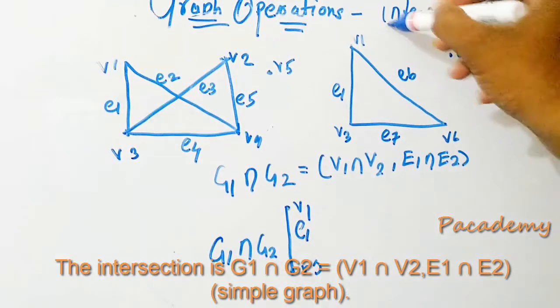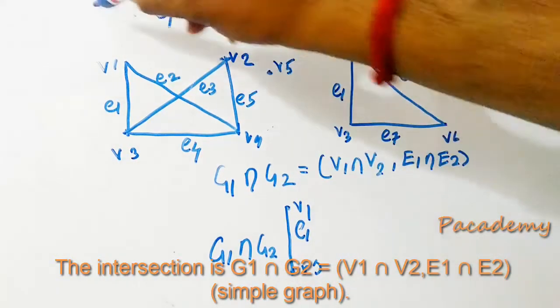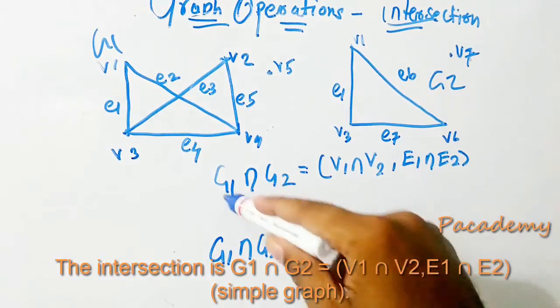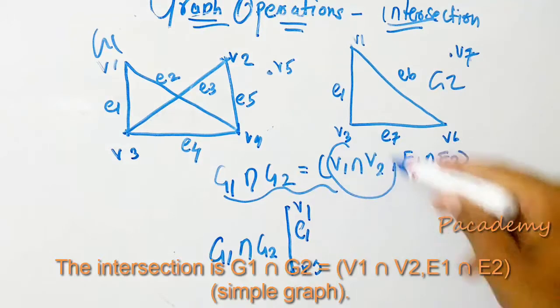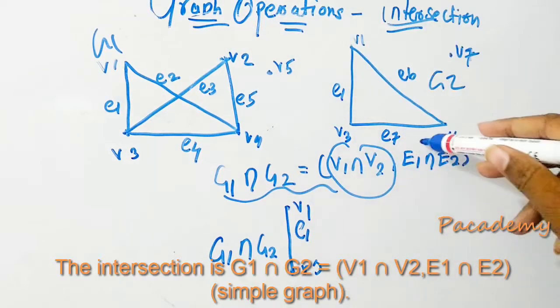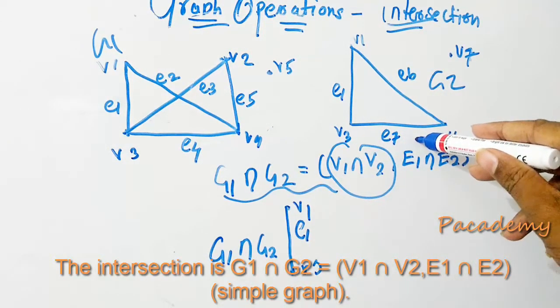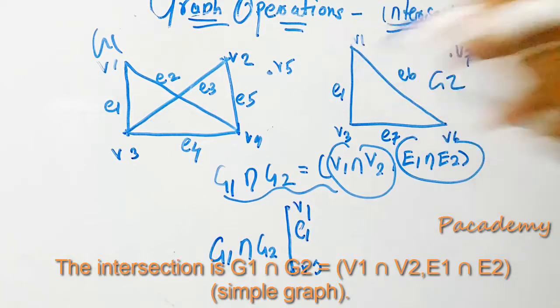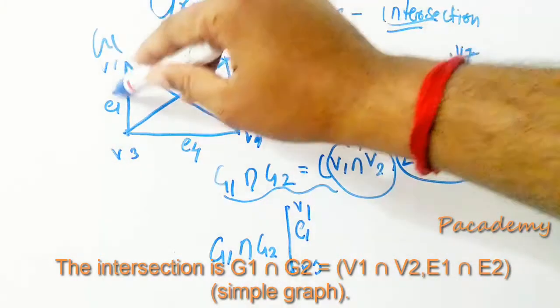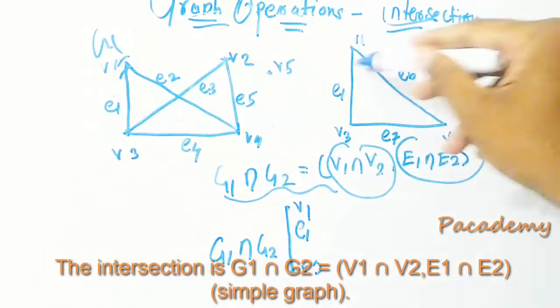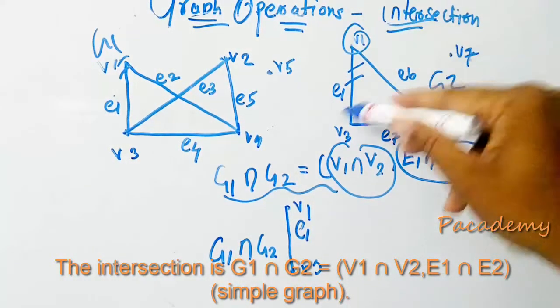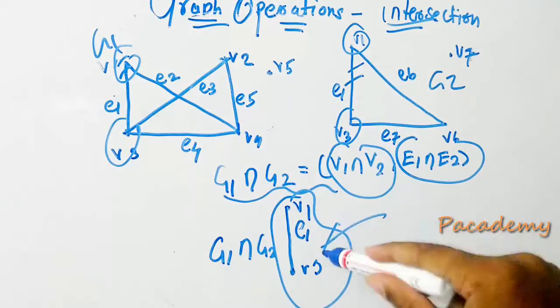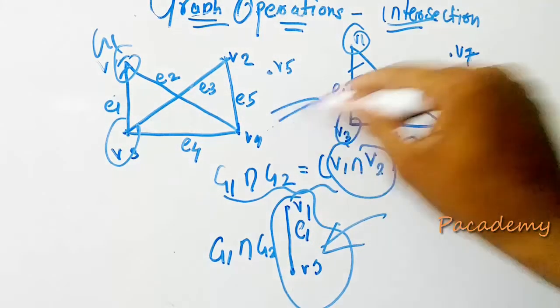The next operation is intersection. Suppose there are two graphs G1 and G2. The intersection is the intersection of the vertices of both the graphs and the intersection of the edges of both the graphs. If you see, the vertices V1 and V3 are common in both the graphs, so only these will come in as the intersection of both the graphs.